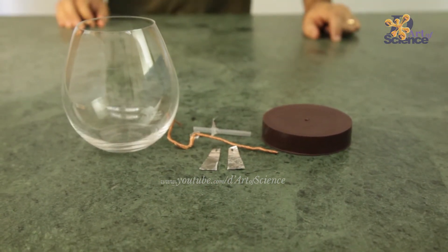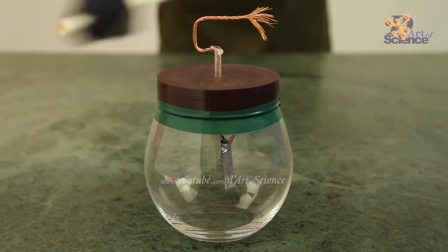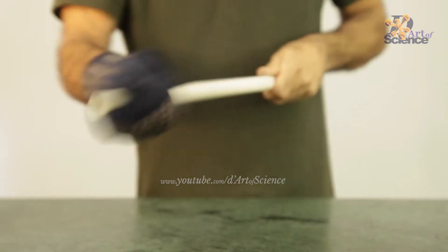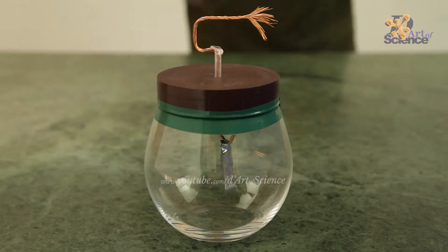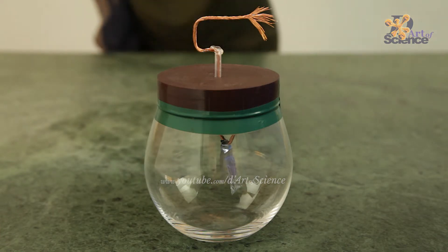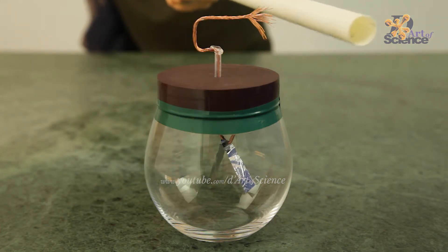Now let's do the experiment. We need to rub the PVC pipe with wool for some time till there's some static developing in it and that you can find out by the electroscope itself. Bring it near the wire on the top and if it is charged, the foil leaves spread out.